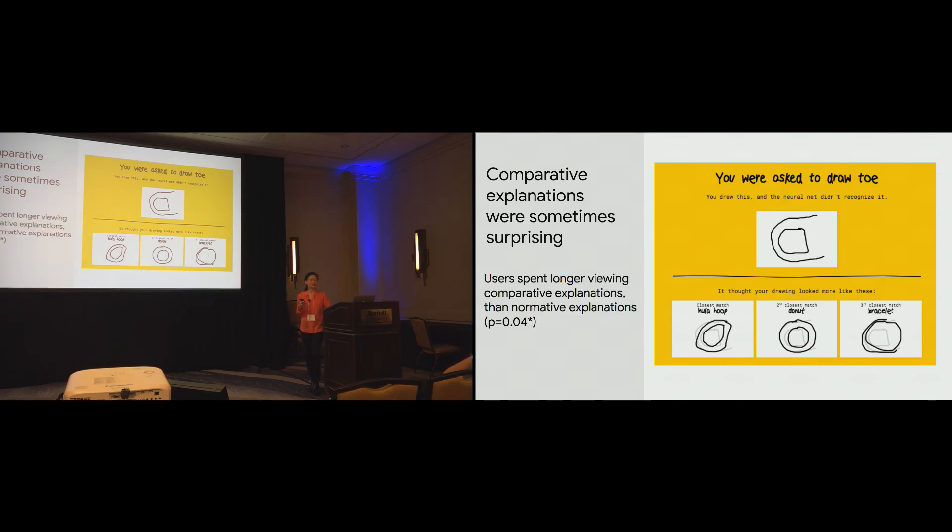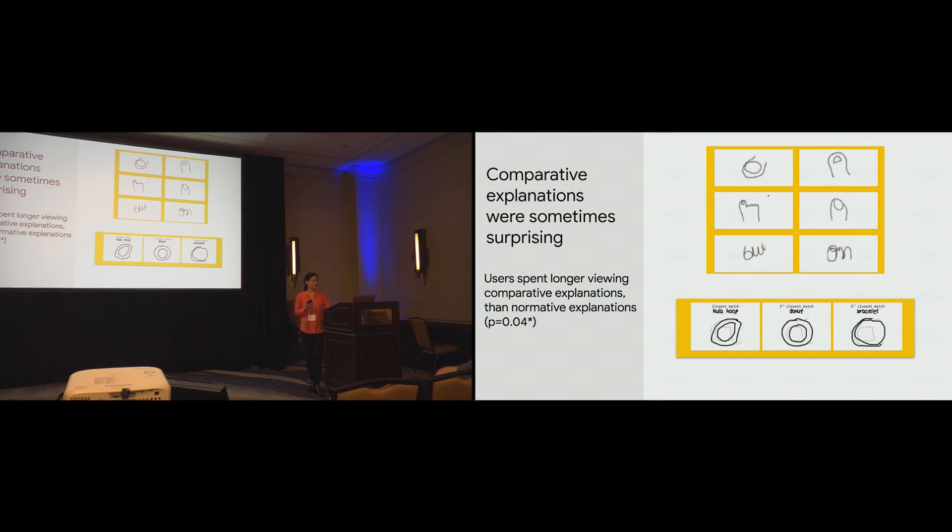In fact, we found that users tended to spend a little longer viewing comparative explanations compared to normative explanations. And this could have been partly because of that element of surprise. It could have also been because perhaps there was some notion of cognitive load. With normative explanations, notice that all the pictures were from the same category. You just look at a bunch of toe pictures. Whereas, in the comparative explanations, the user would have to compare across multiple categories. And that could have potentially contributed to this longer duration of time they spent looking at the explanation.